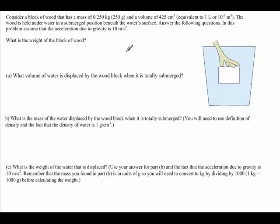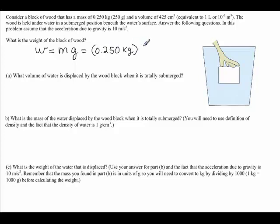The first question asks: what is the weight of the block of wood? We know that weight is equal to the mass of the object times gravity. The mass of the block of wood is 0.25 kilograms, and we're assuming the acceleration due to gravity is 10 meters per second squared, so the weight of the block of wood is 2.5 newtons.